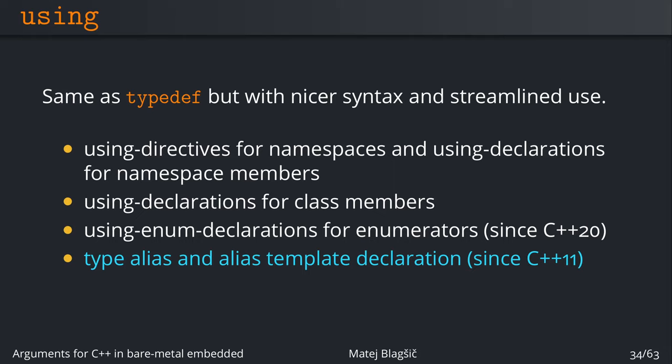These are the four bullet points on where the using can be used, but the one we're looking at right now and for today is the last one, which is a type alias or alias template declaration. This is an alias for a different type.